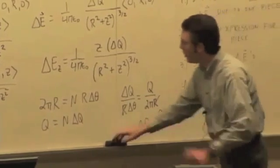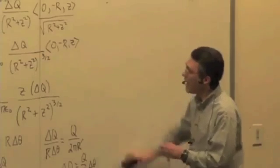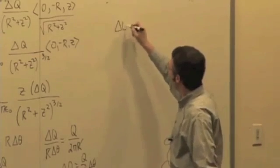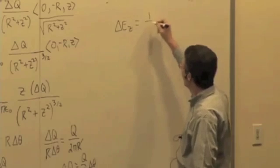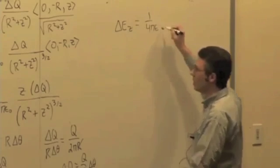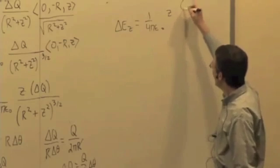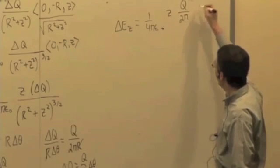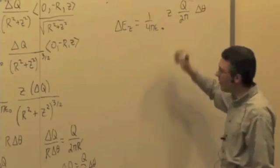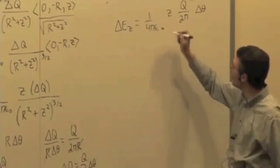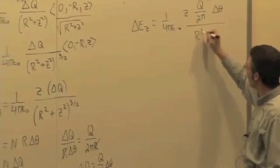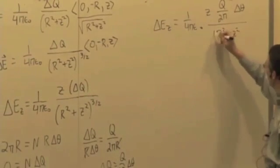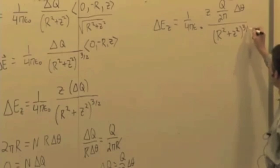Let's plug this all in and see what we get. We have delta E sub z is equal to 1 over 4 pi epsilon 0, z times q over 2 pi times delta theta, just making that substitution, over r squared plus z squared to the 3 halves.